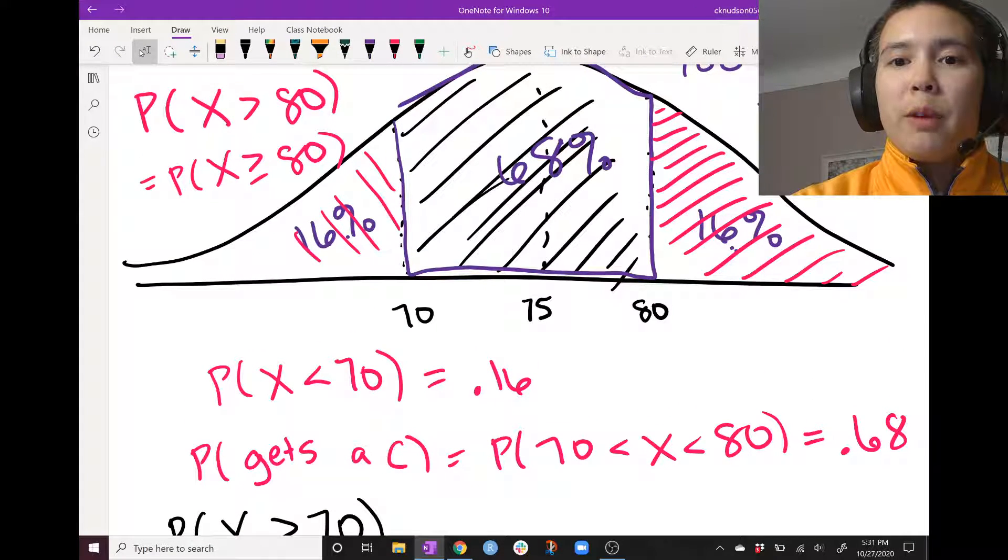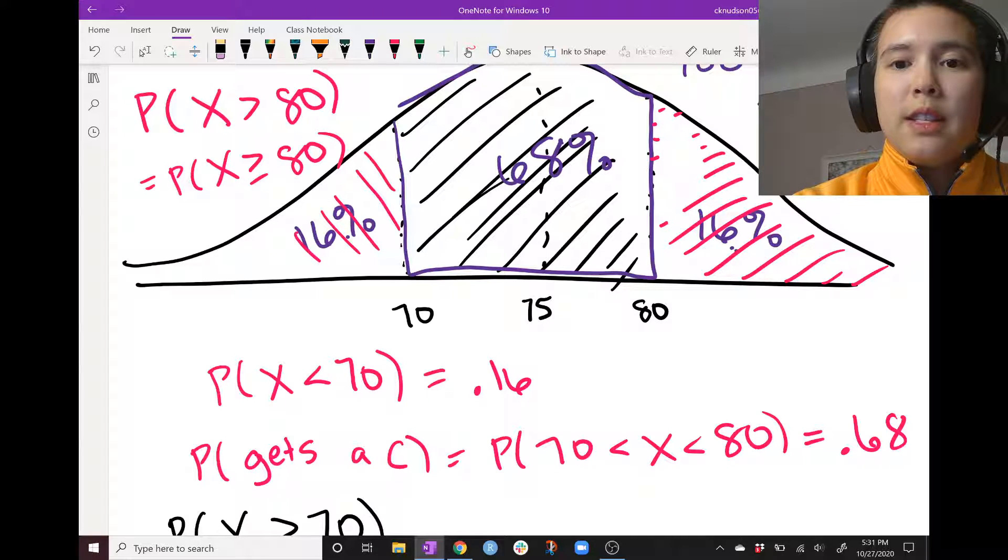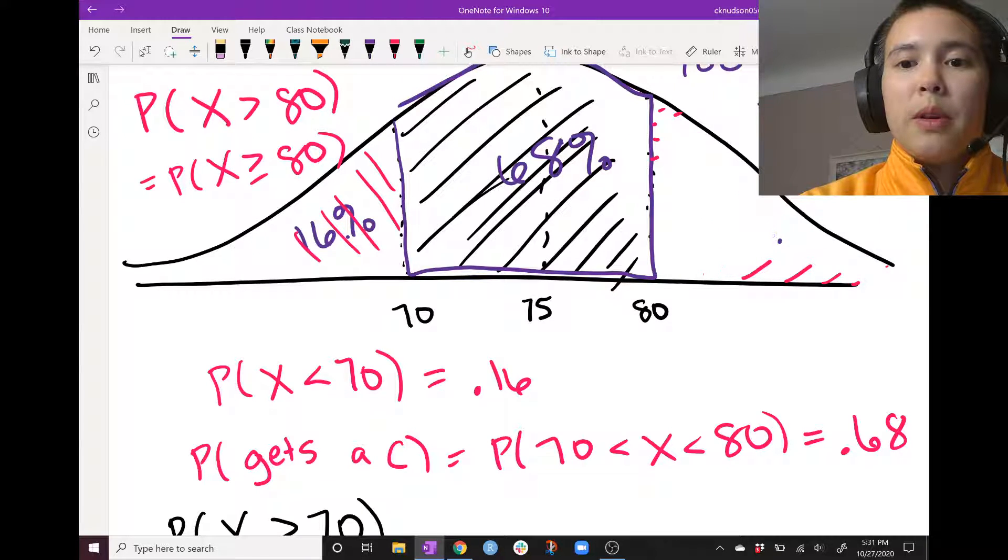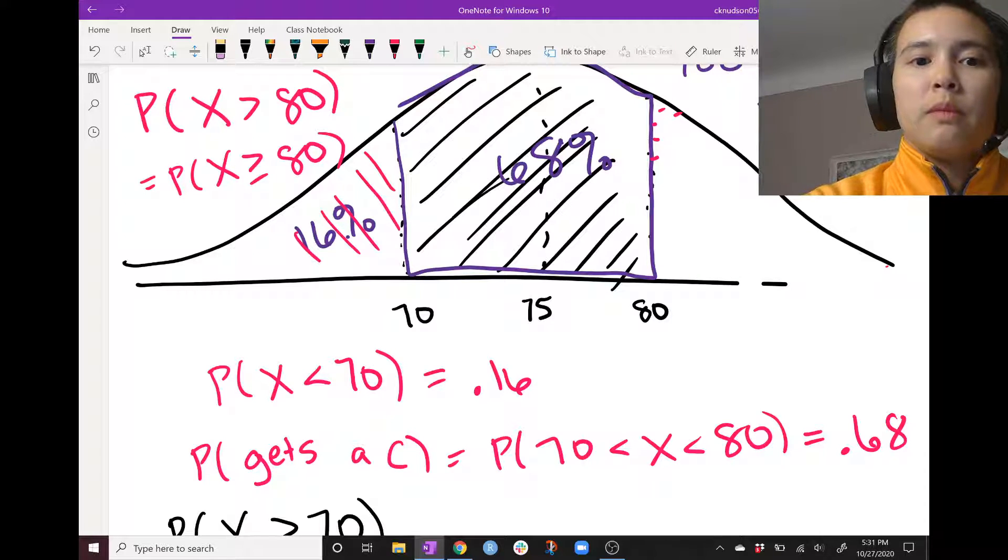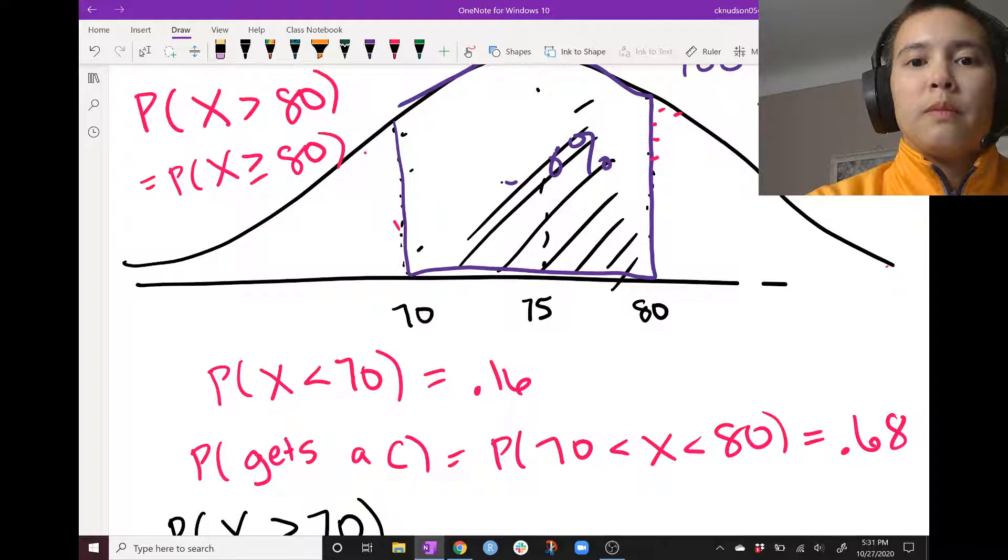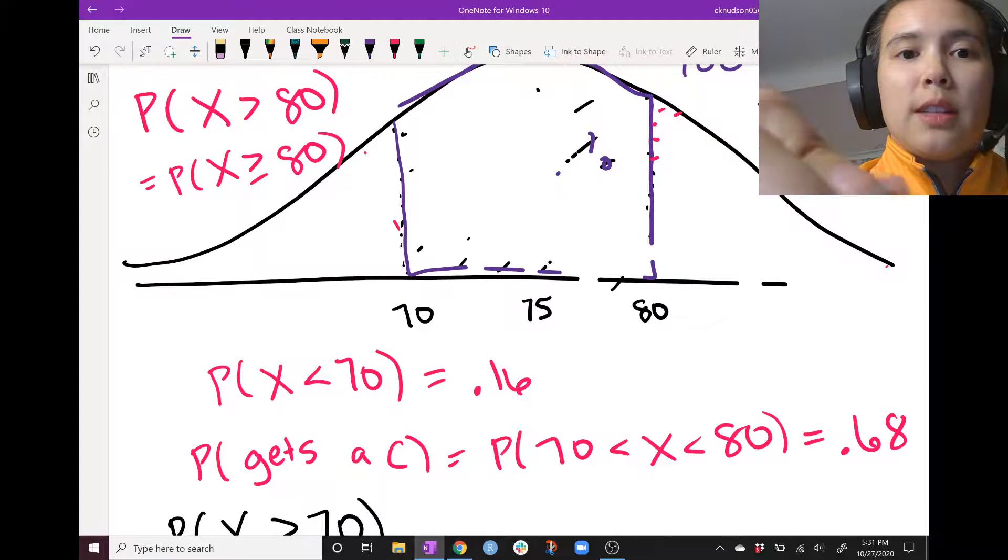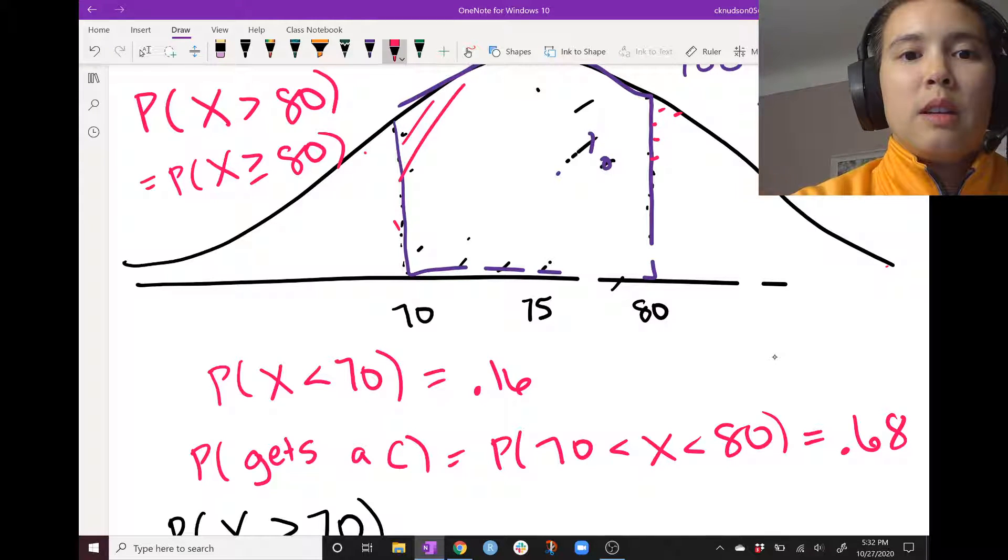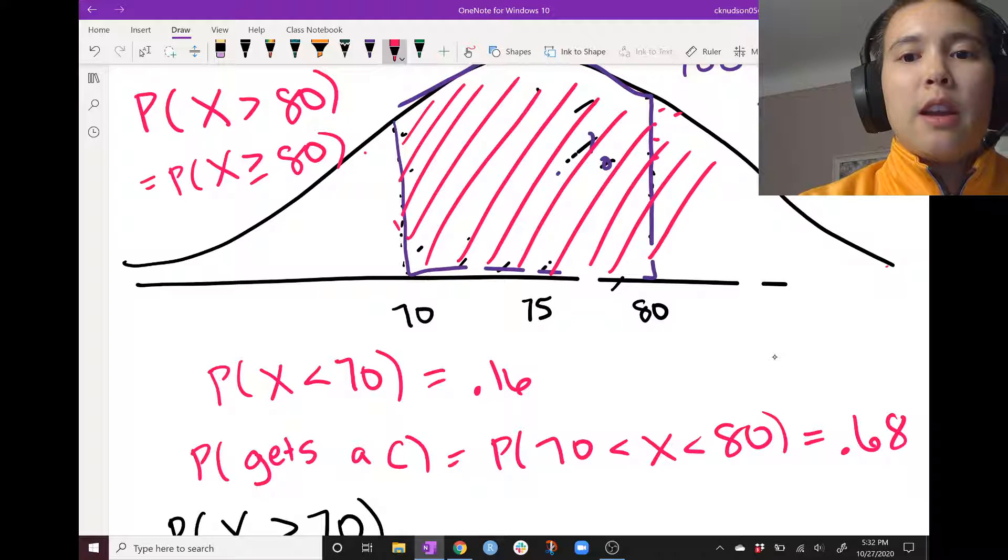Let's go back to this picture here. We're looking for the probability that X is greater than 70. Clean this up a little bit. Okay, so if we want the probability X is greater than 70, then we want to find this pink area here.